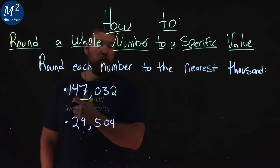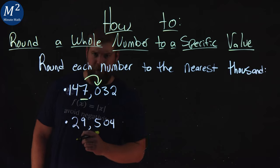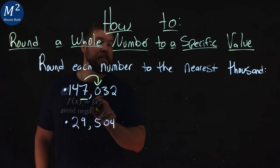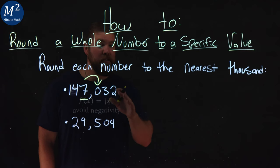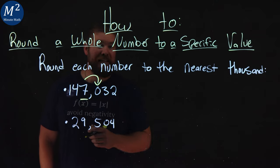So like before, we take the 7, we look what's to the right of it. We have a 0 here. So the right of 7 is a 0, and so 0 is between and including 0 through 4, which means we stay rounded down. We don't change the 7.